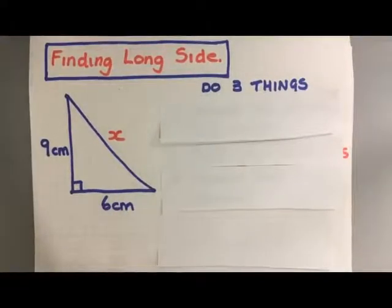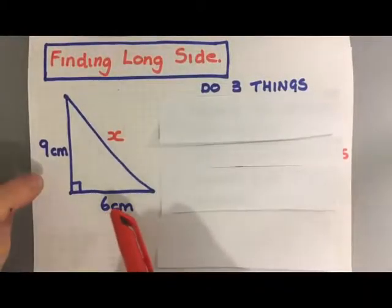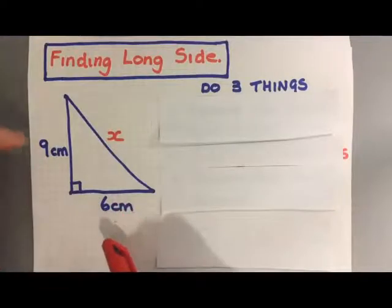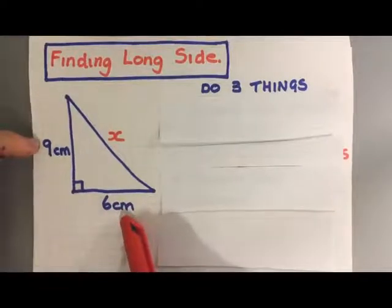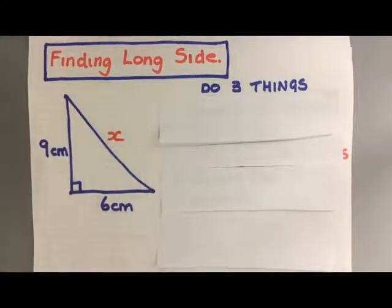What do I mean by that? I mean you'll be given a right-angled triangle, okay? You'll be told two of the sides which just happen to be the two short sides, and you'll be asked to find the long side.